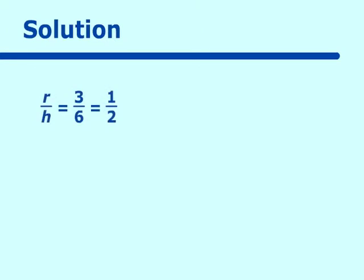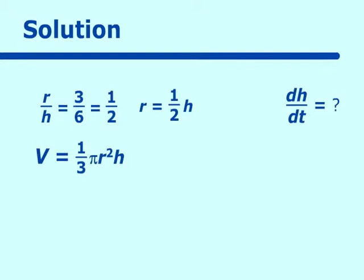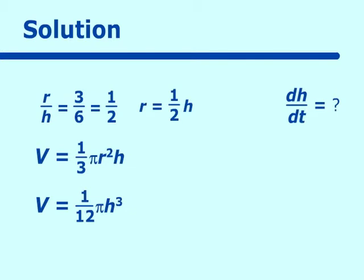The relationship between radius and height is r/h = 3/6 = 1/2, so r = h/2. We substitute that into our volume formula: V = 1/3 π (h/2)² h. Simplifying, we get V = 1/12 π h³. Now we can take the derivative readily: dV/dt = 3/12 π h² dh/dt, which equals 1/4 π h² dh/dt.